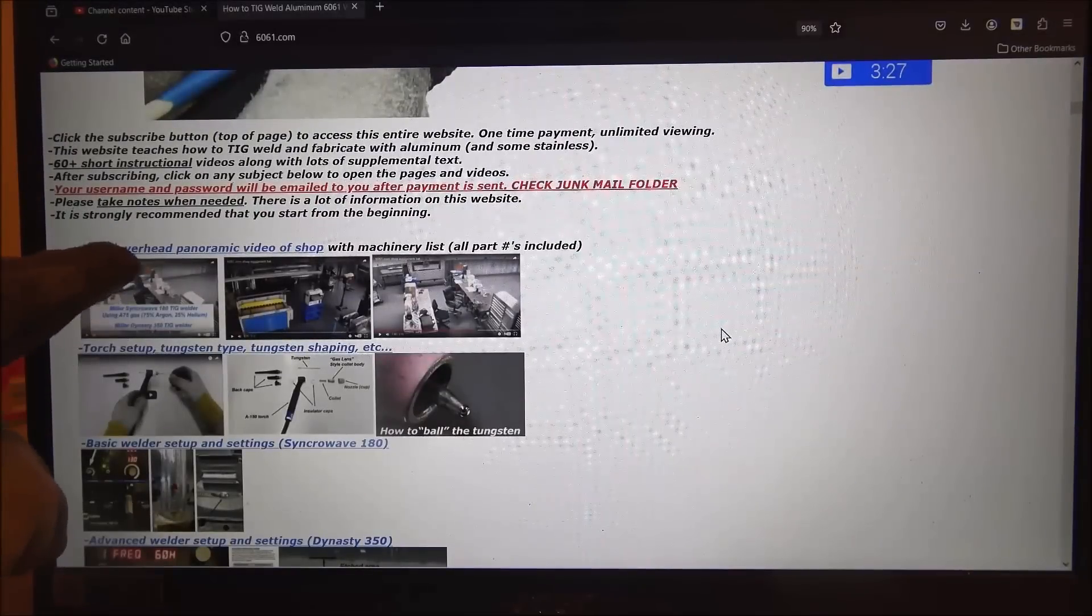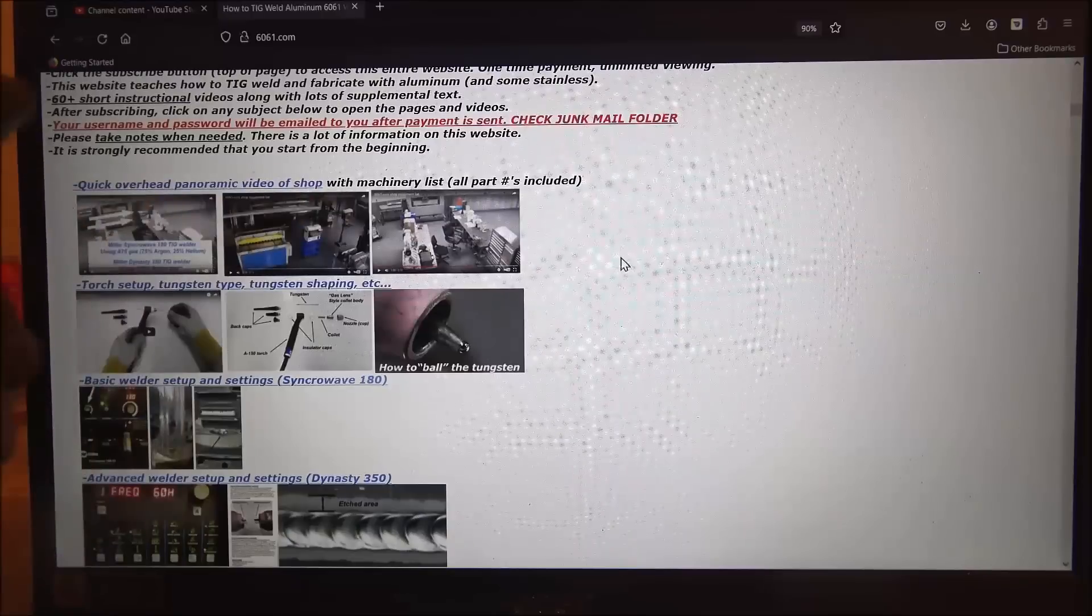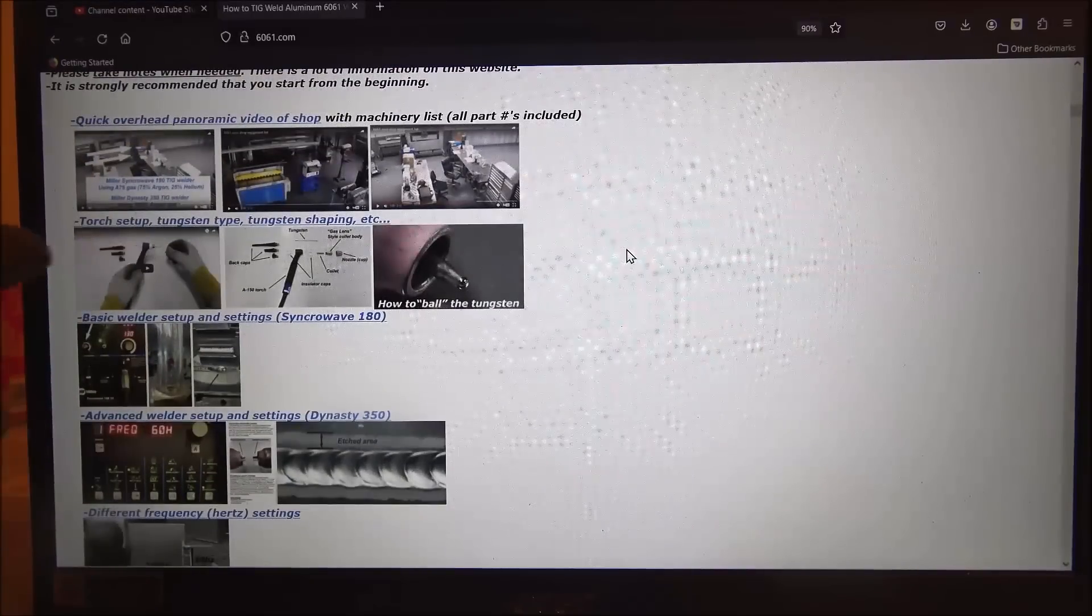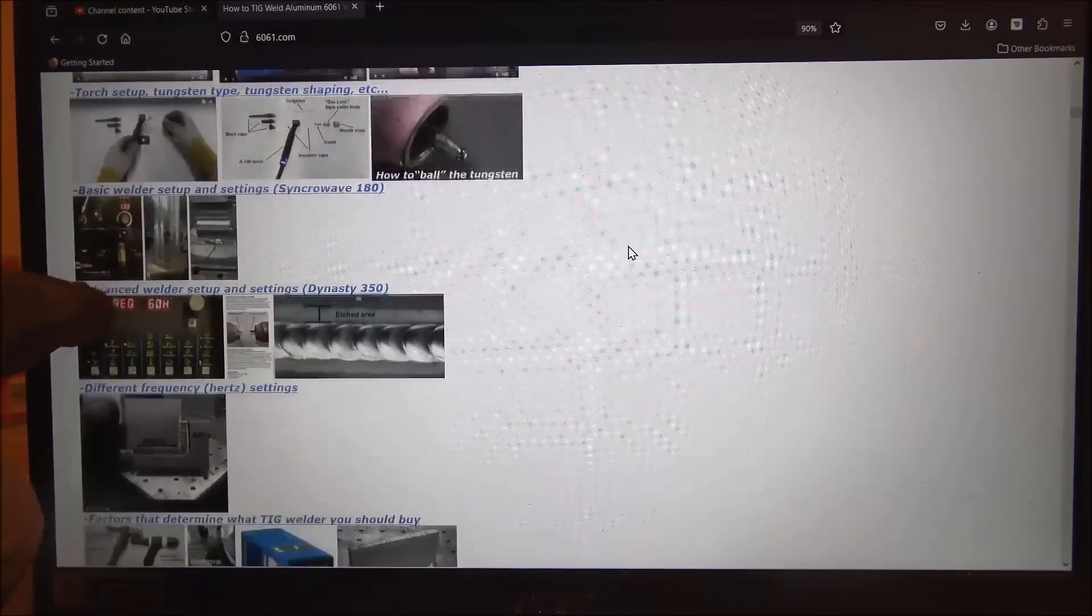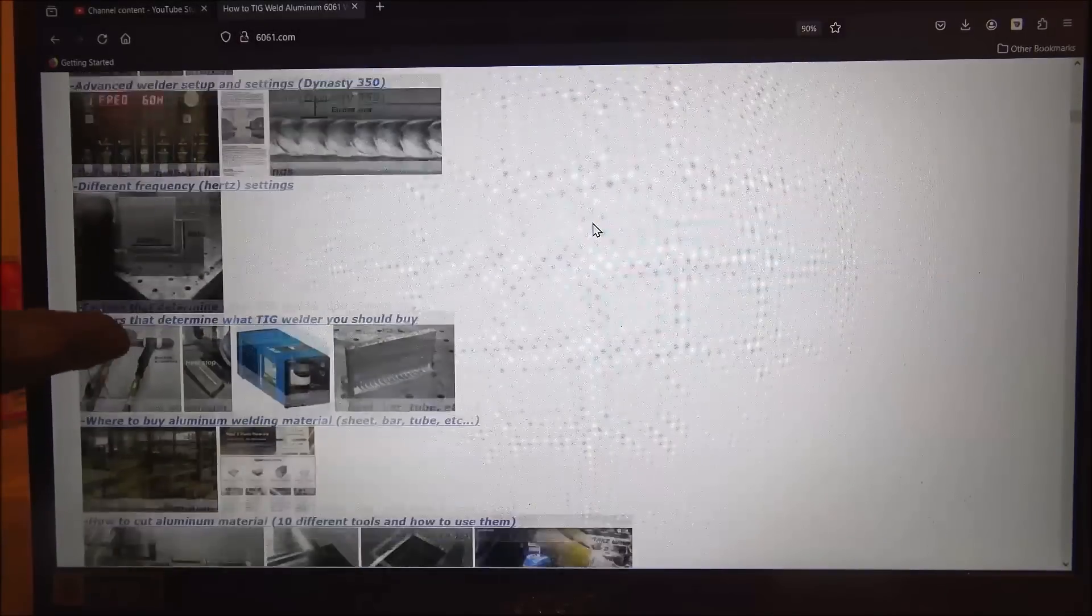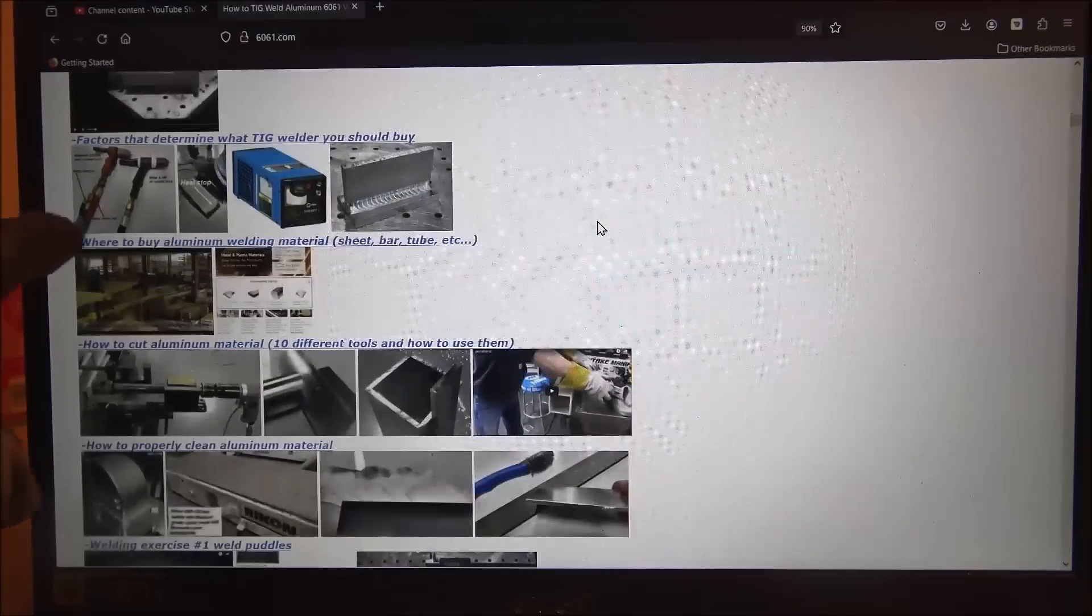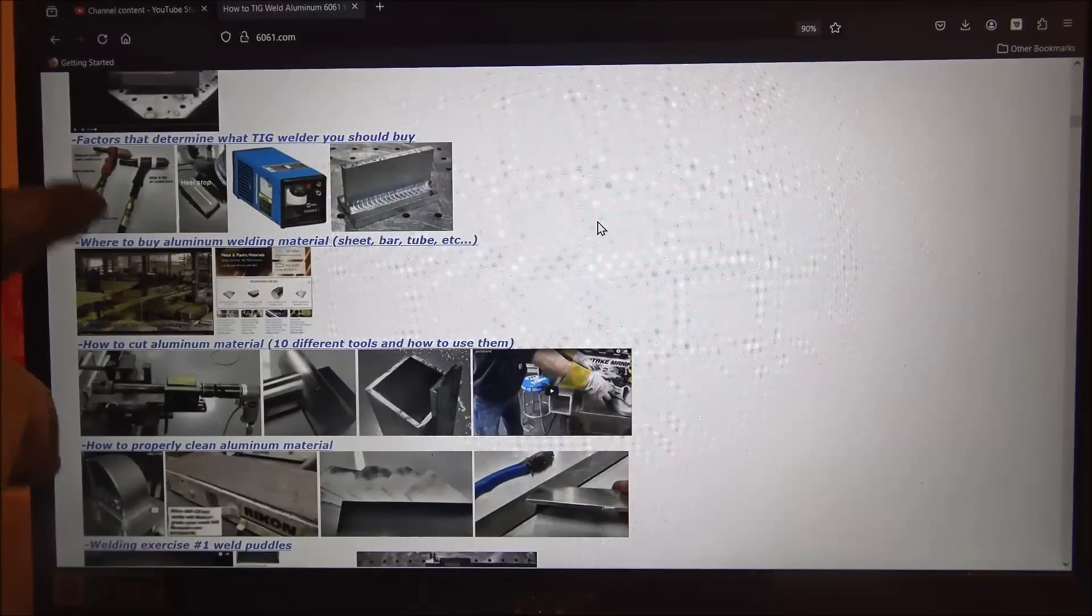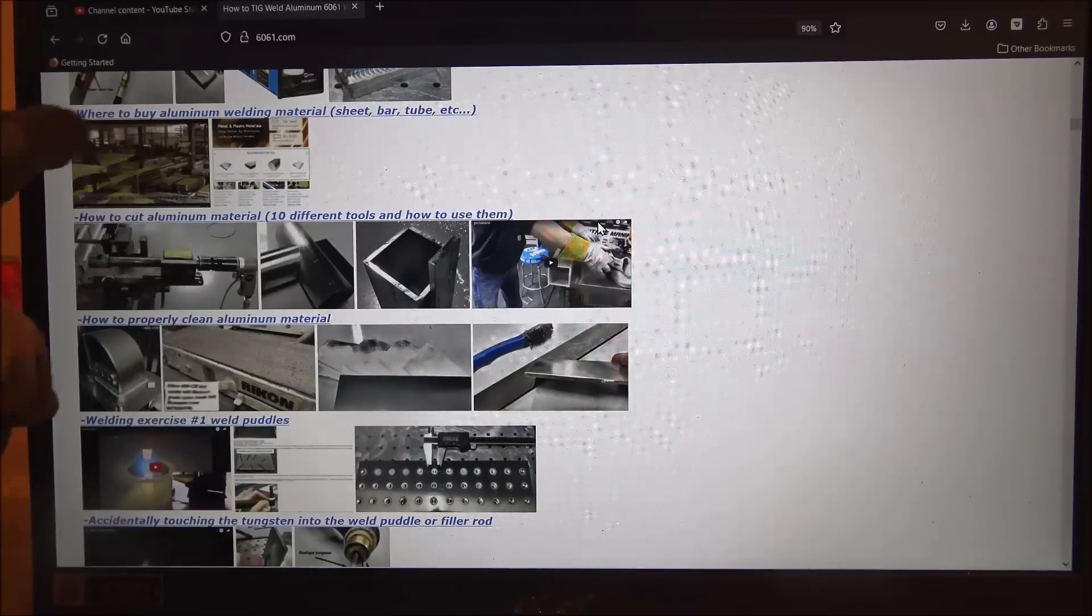I'll show you my shop setup with part numbers for all my machinery, bandsaw blade types, tooth spacing, speeds, tungsten, torch setup, how to ball it properly for what you're doing. Advanced welder setup, basic welder setup, what frequency changes and what I prefer. And then what kind of welder you should consider buying depending on what you're doing. Where to buy aluminum welding material online or at big stores.